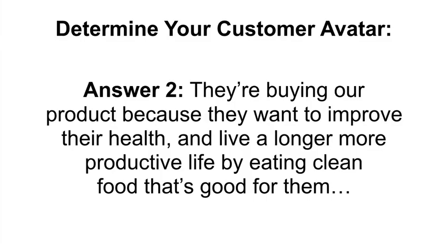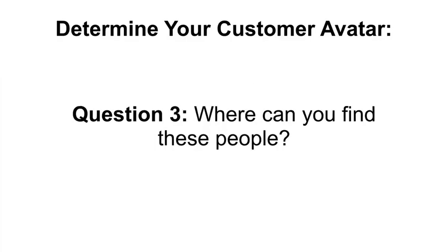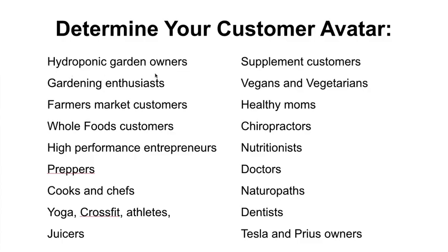At this point we've answered question number one — who's buying our product? Our broadest answer was people who actively spend money on products that improve their health and fitness, and everyone in the categories above that. We've also answered question number two — why are they buying? They're buying because they want to improve their health and live a longer, more productive life by eating clean food. That brings us to question number three: where can we find these people?